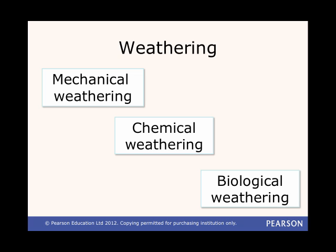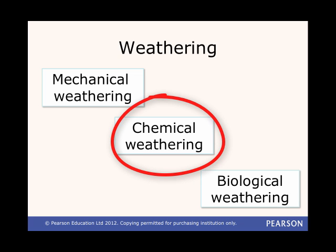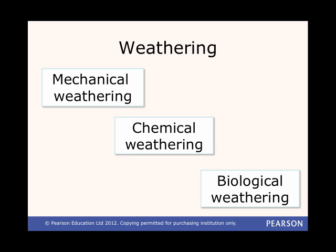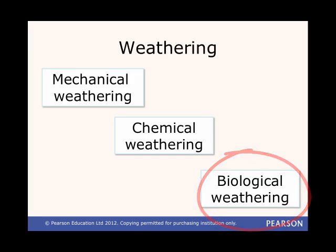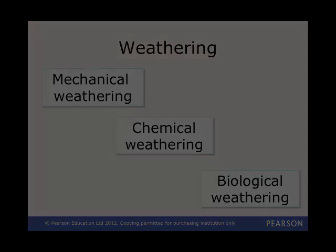Other types of weathering happen at the coastline. Chemical weathering is when minerals in rocks slowly dissolve from the rainwater. And biological weathering is when plant roots or animal and bird burrows weaken the rock.